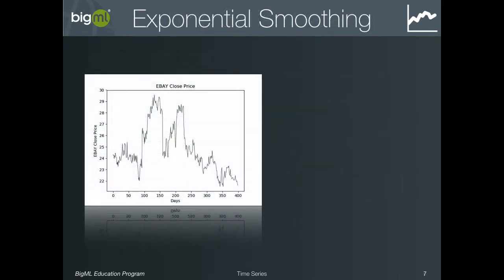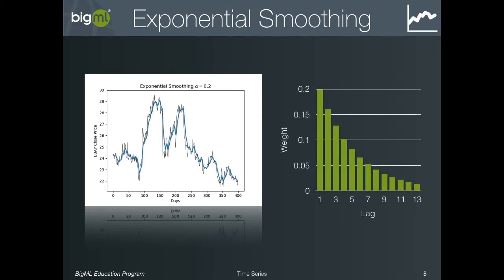To discover the pattern in your time series data, BigML attempts to fit a variety of exponential smoothing models to the data. Essentially, this means that the model's forecast is based on a weighted combination of the instances that came before the forecast instance. An instance's weight in this combination is determined by how far back in time the instance is — instances in the more recent past are considered more relevant than instances in the distant past.